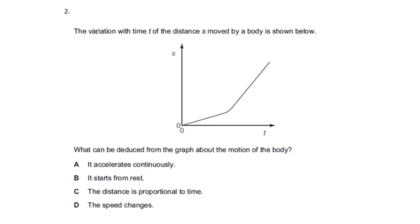Question two: the variation with time t of the distance s moved by a body is shown below. What can be deduced from the graph about the motion of the body?